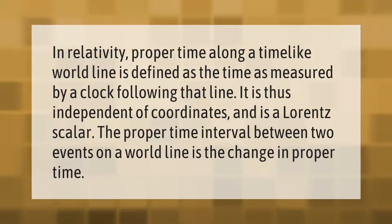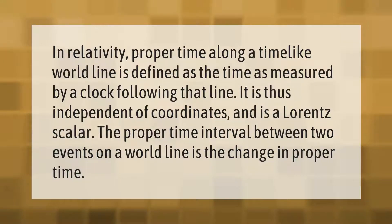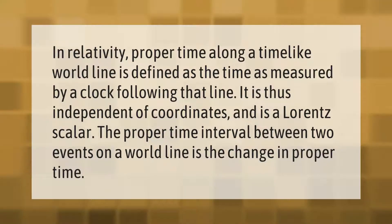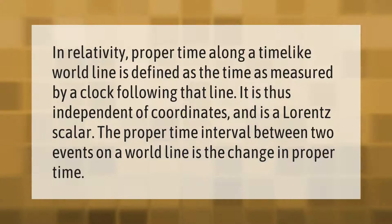In relativity, proper time along a time-like world line is defined as the time measured by a clock following that line. It is thus independent of coordinates and is a Lorentz scalar. The proper time interval between two events on a world line is the change in proper time.